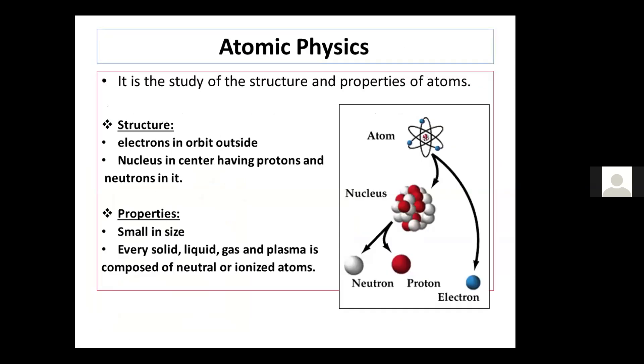Atomic physics. It is the study of structure and properties of atoms. Structure of atoms consists of electrons, protons, neutrons, and nucleus. Electrons move around nucleus in orbits. Nucleus lies in the center of atoms and has protons and neutrons in it.